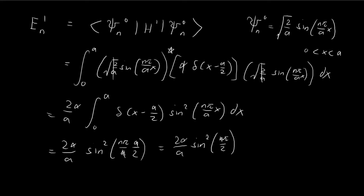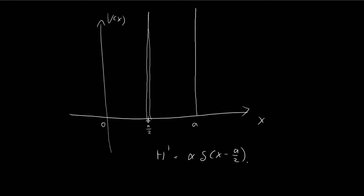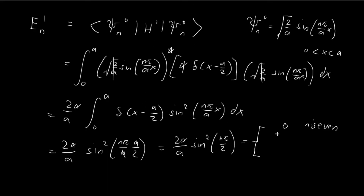In the end, we get 2α/a times sine squared(nπ/2). Since n is a natural number, if n is even — say 2, 4, or 6 — you get sine squared of π, 2π, 3π, etc., which all equal zero. So if n is even, the first order correction is zero and there is no correction. The reason is that the wave function equals zero at a/2 when n is even, so it does not feel the effect of the perturbation.